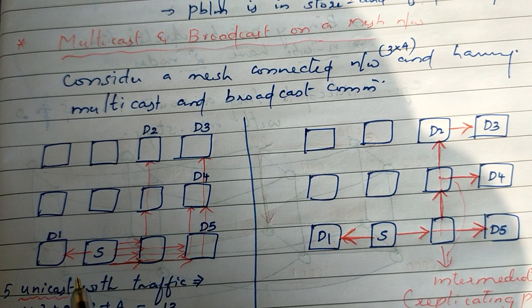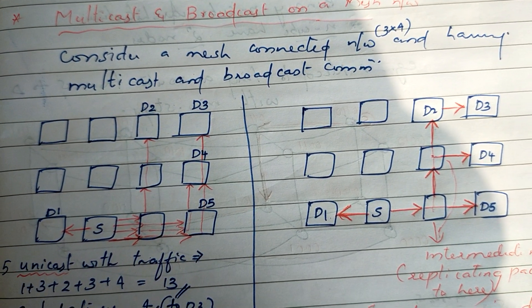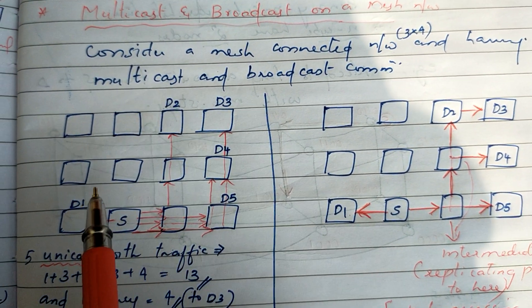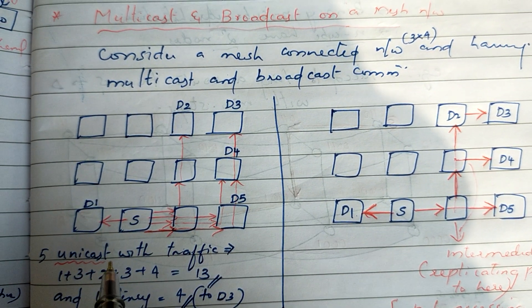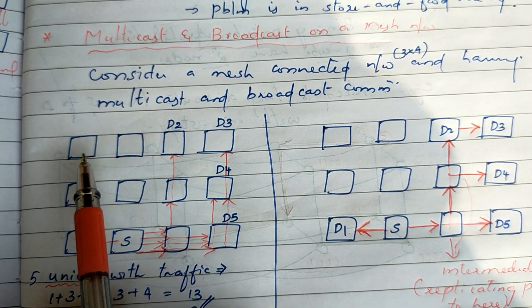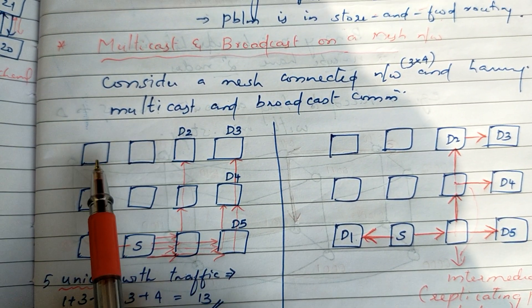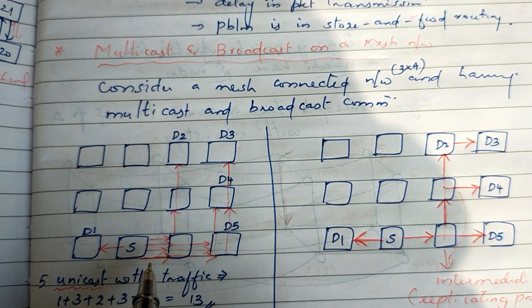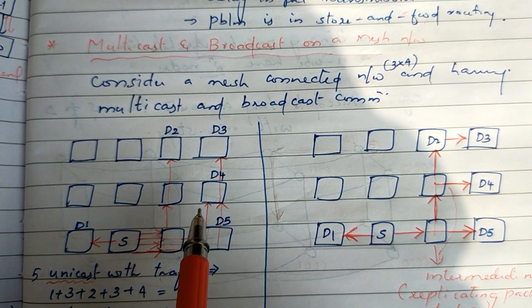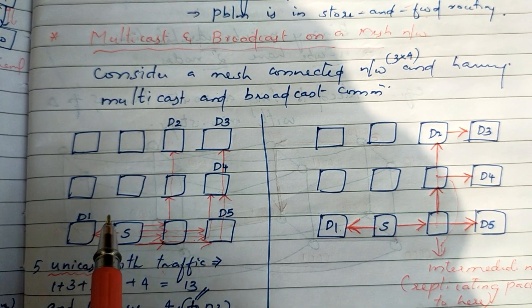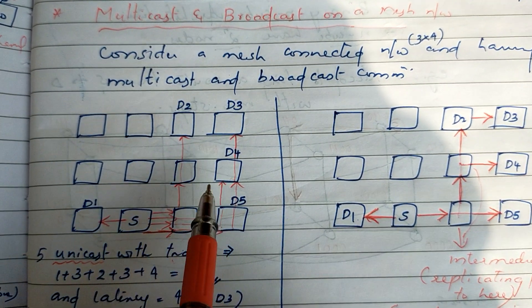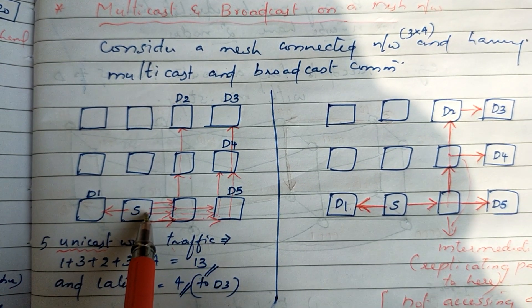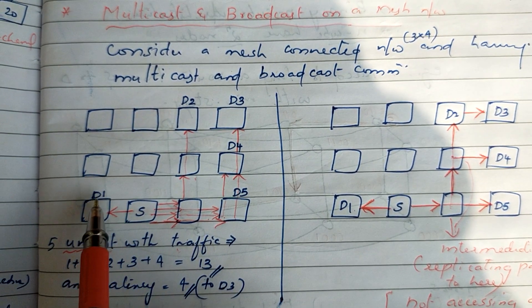For this topic we have 4 figures. It is a 3 by 4 mesh — that is 3 or 4. First, we have a 3 by 4 Connected Mesh Network for Multicasting and Broadcasting. The first figure shows Unicast: this is the source node and the destination nodes.